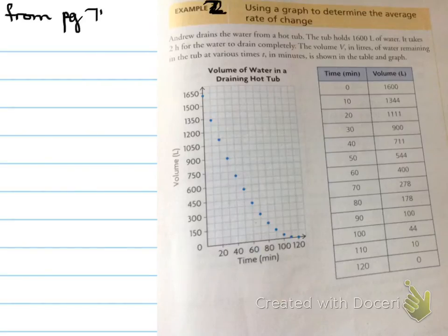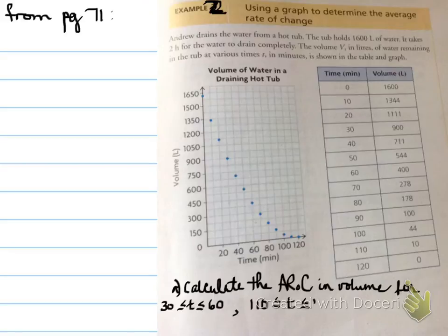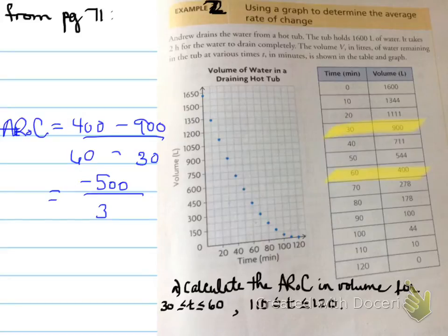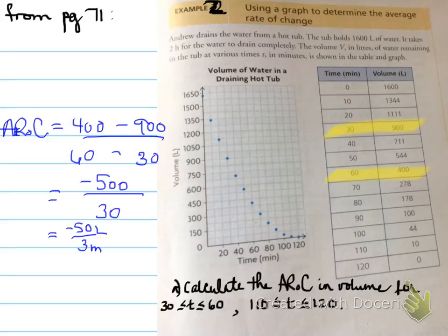Example 2, taken from page 71 in your textbook. You're asked to calculate the average rate of change in volume for the interval from 30 to 60. We look on the chart, highlight 30 and 60, write the points going upwards, subtract them, and find it's negative 500 over 30, which reduces to negative 50 over 3. That means the volume is changing by negative 50 liters every 3 minutes - water is dropping.